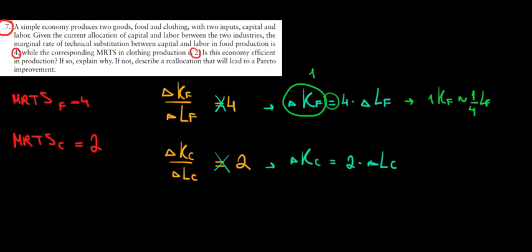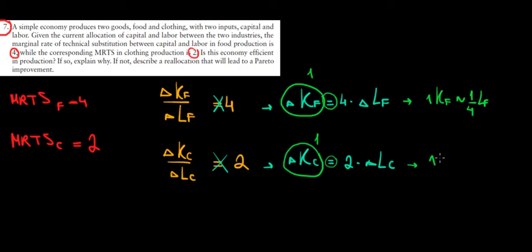Applying the same logic to the clothing company: to get one unit of capital, the clothing company must give up 1/2 units of labor, because 2 times 1/2 equals 1. So one unit of capital for the clothing company is worth 1/2 units of labor for the clothing company.